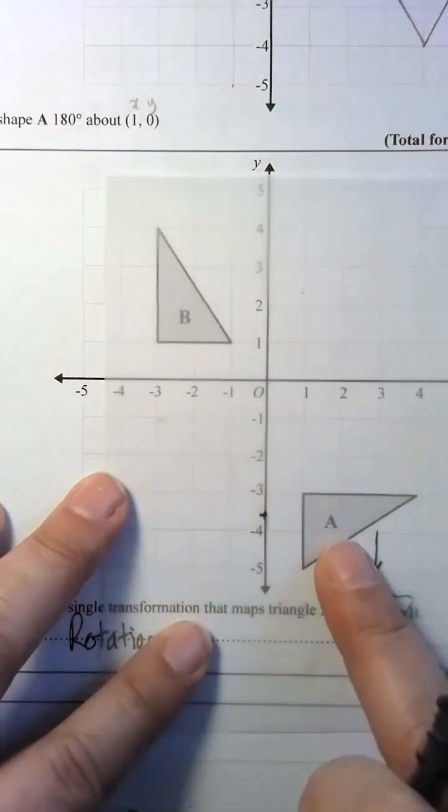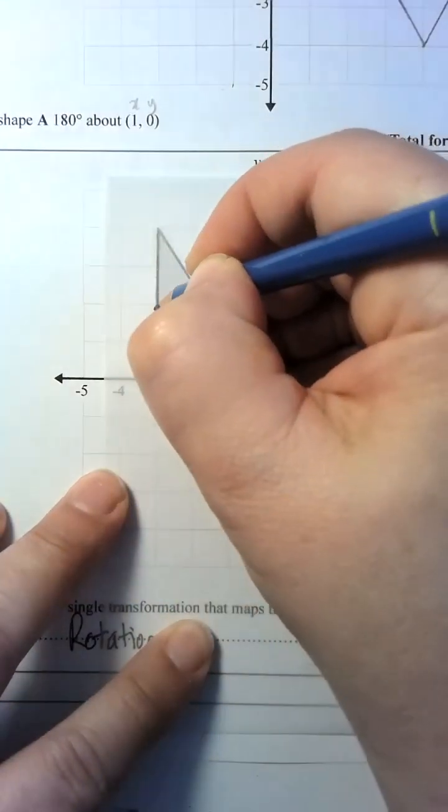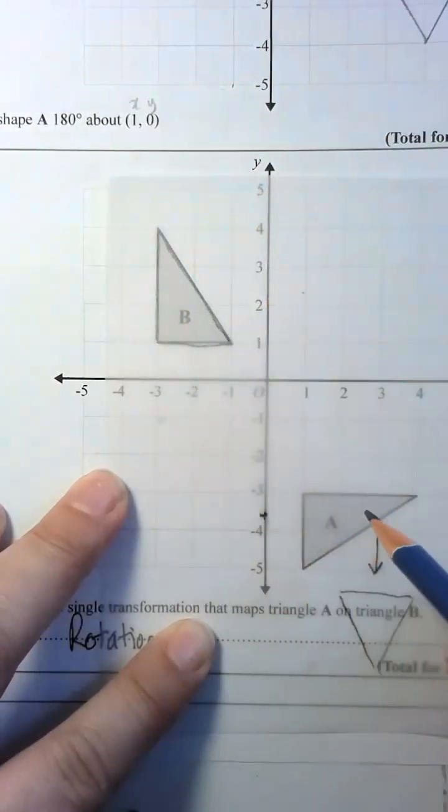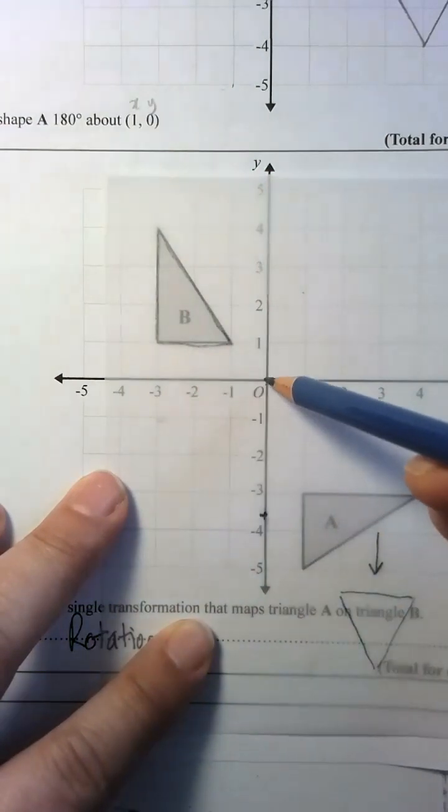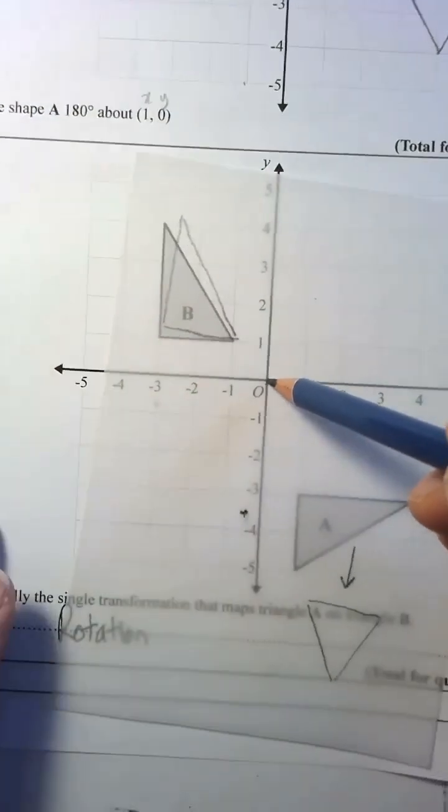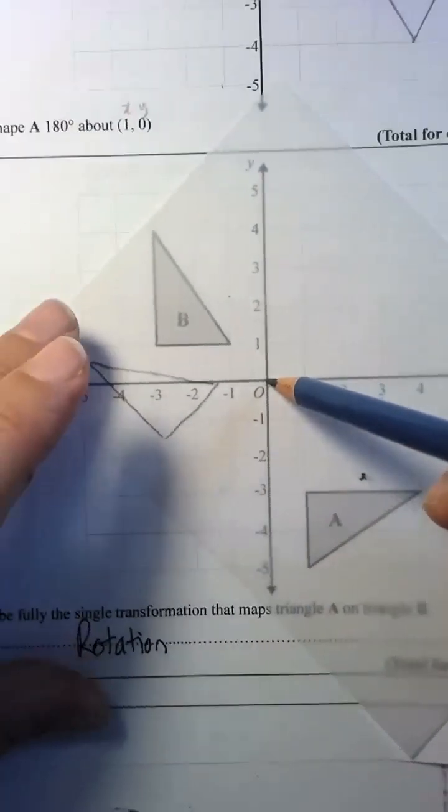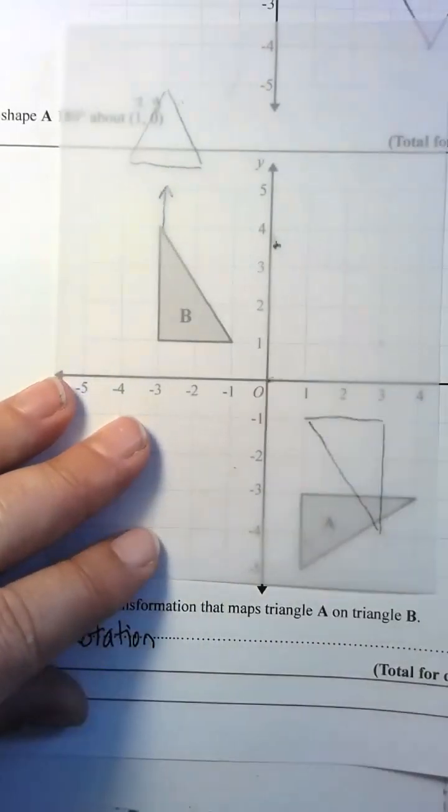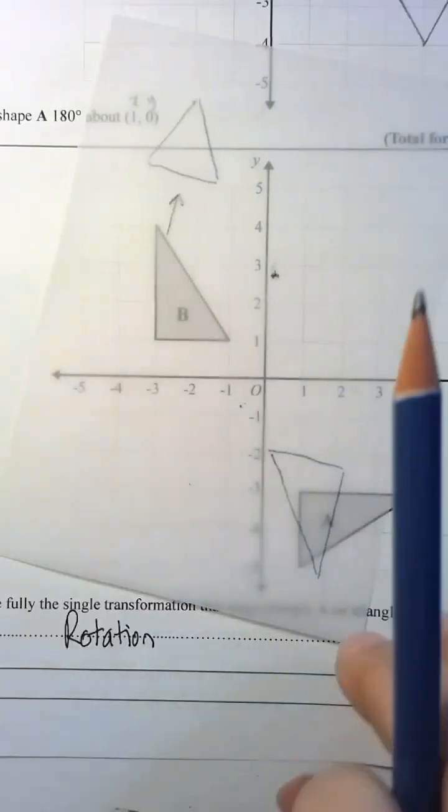So I need to get this down to here. I draw my original shape, just like we did before. But this time, I don't know where the center is. It's always a good idea to start at (0,0). So I'm going to start at (0,0). I'm going to turn it. And that is now definitely not in the right place, so I need a different center of rotation.